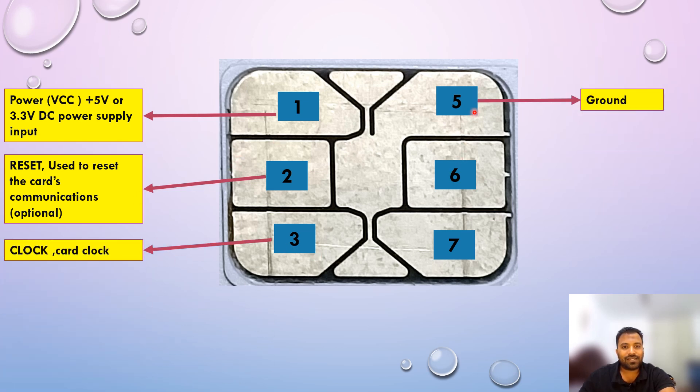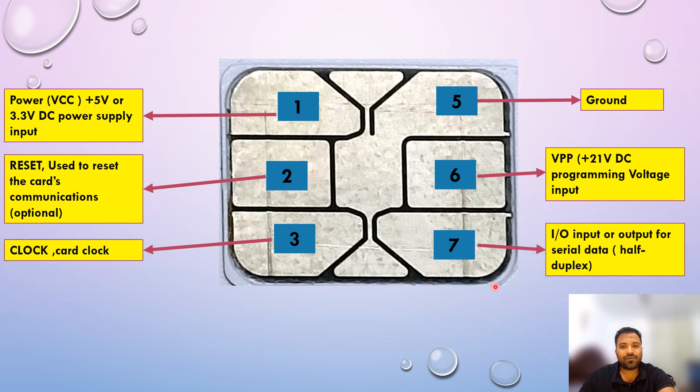This is a clock, and this is the ground. And this one is the programming voltage, usually 21 volts. And this 7 is the I/O input or output for the data input and output data. This is the thing.